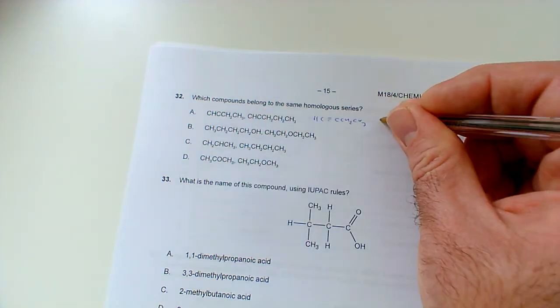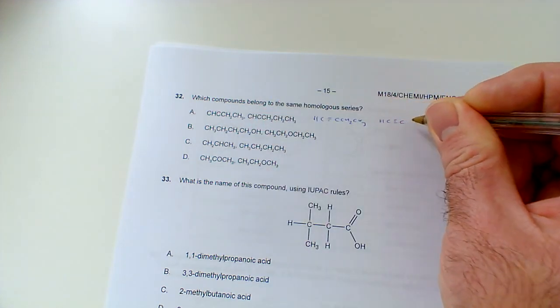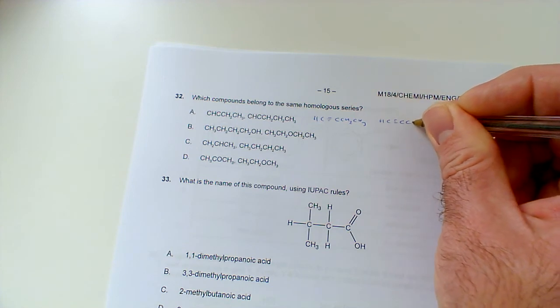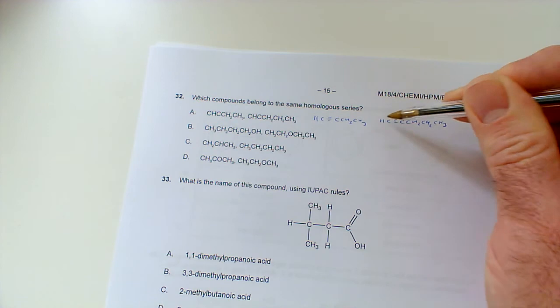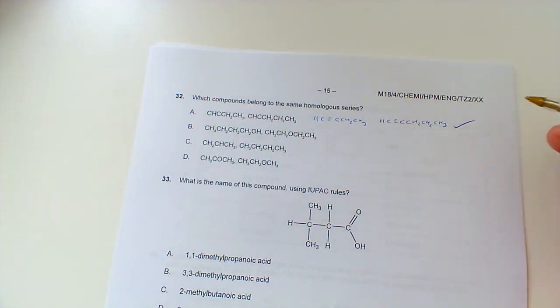And then the next one, okay, we've got, again, a triple bond, by the looks of it. And then a C, CH2, CH2, CH3. So, 1, 2, 3, 4, 5. So, that's pent-1-ine. So, this is looking good. They're both alkynes.